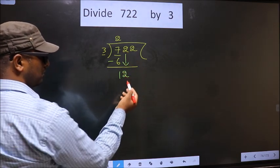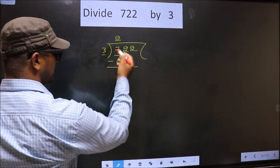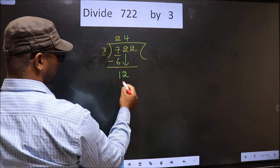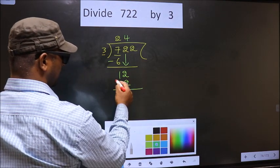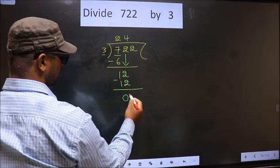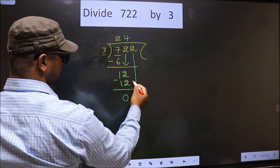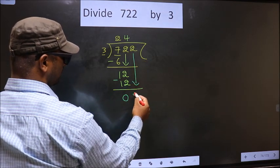Now here we have 12. When do we get 12 in 3 table? 3 fours, 12. Now you subtract. 12 minus 12, 0. Now you bring down beside number. So 2 down.